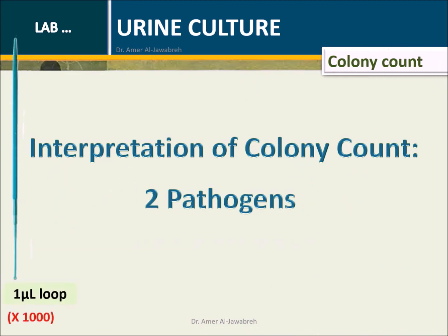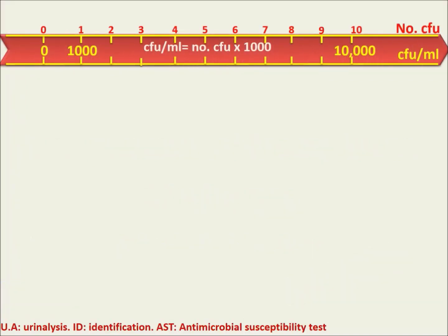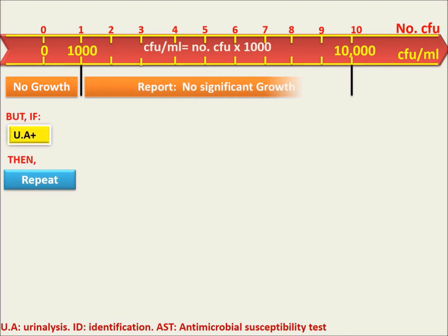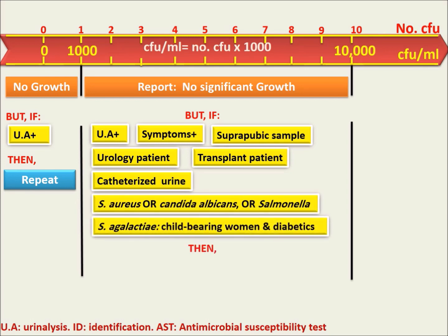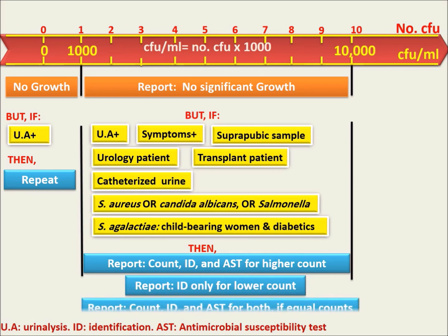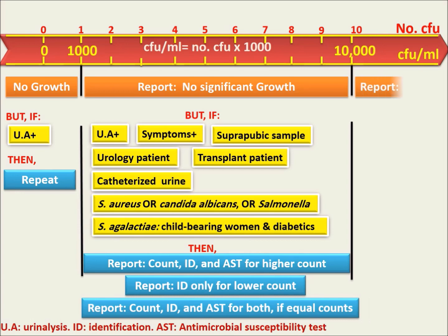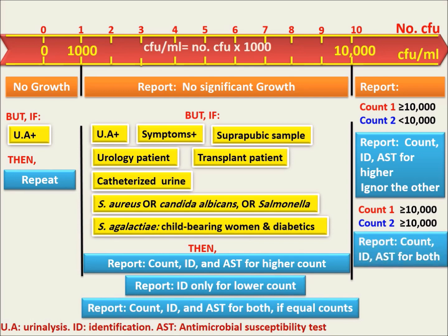Colony count — interpretation for two pathogens, such as E. coli and Enterobacter. If the plate has no colonies, report no growth; but if urinalysis is positive, repeat. If the plate has 1 to 9 colonies of each bacteria, report no significant growth; but if a yellow box condition appears, report count, ID, and AST for the higher count, and ID only for the lower count, or count, ID, and AST for both if counts are equal. If count 1 is greater than or equal to 10,000 colonies and count 2 is less than 10,000, report count, ID, and AST for the higher count and ignore the other. If both counts are greater than or equal to 10,000 colonies, report count, ID, and AST for both.